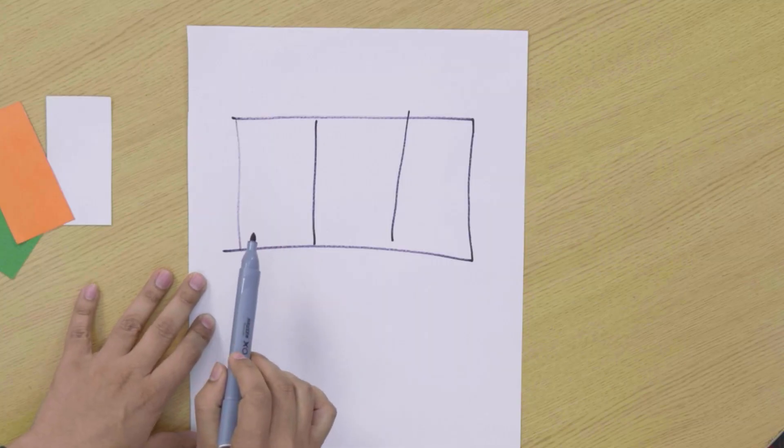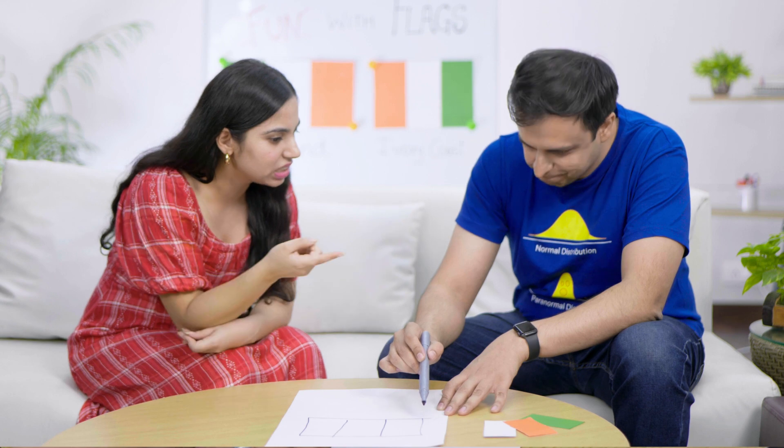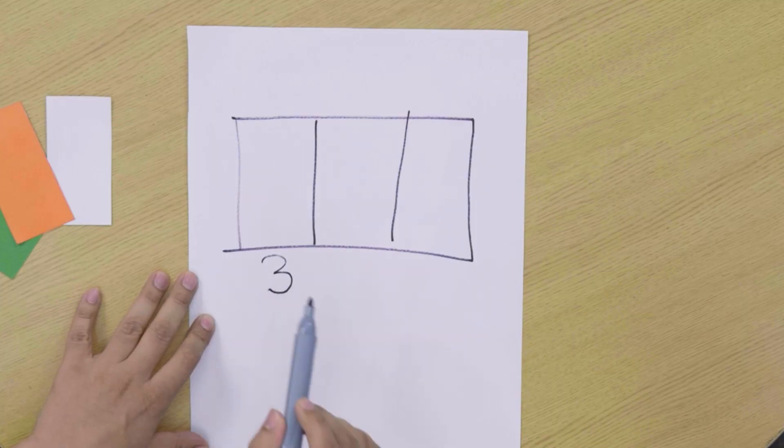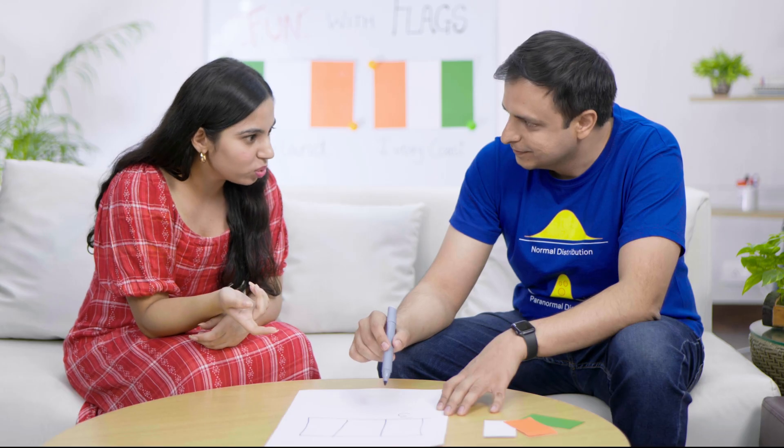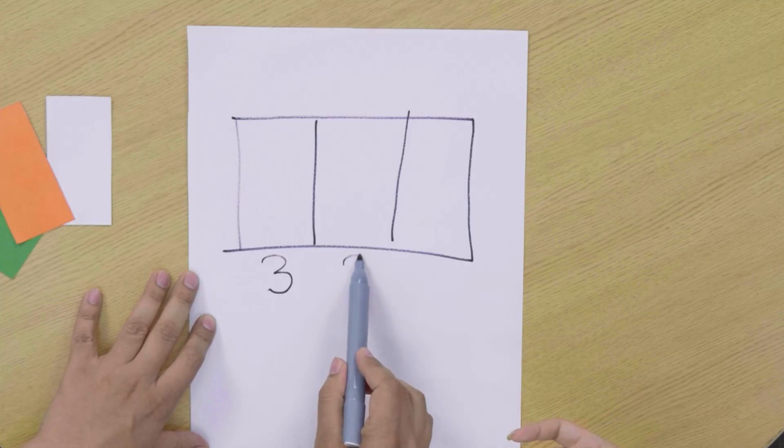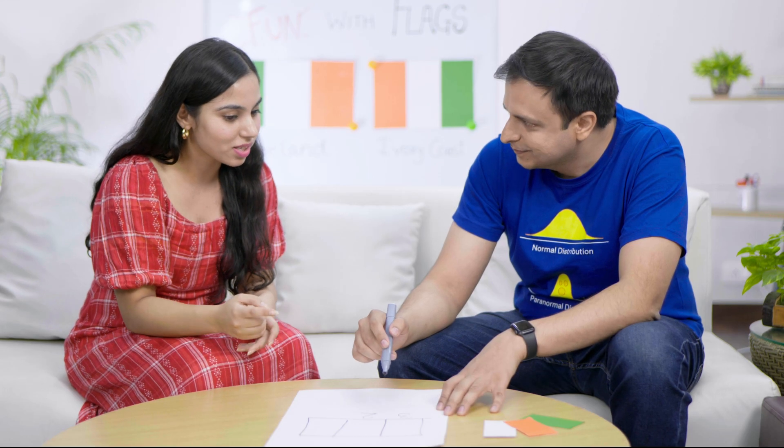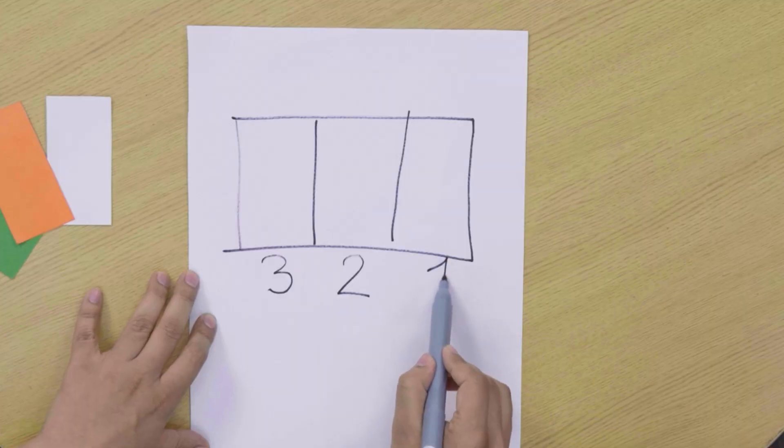In how many ways can you color this first strip? Is it three? Green, orange, white. Right. And what about the second strip? Two, since I've already used one color. Great. And what about the last strip? Just one, since I've already used two colors. Awesome. But where are we going with this?